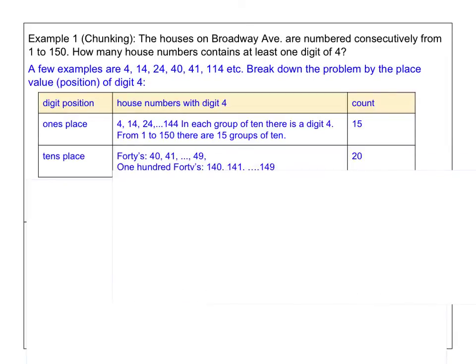Let's move on to the tens place. Now in the tens place, this time 4 has to be in the tens place. So we have 40, 41, and so on, all the way to 49. And we also have 140. This 4 is also in the tens place because we are counting house numbers from 1 to 150. 141 all the way to 149. And there are 10 numbers in this group, in the 40s group, and also 10 numbers in this 140s group. So we counted a total of 20 house numbers that have 4 in the tens place.